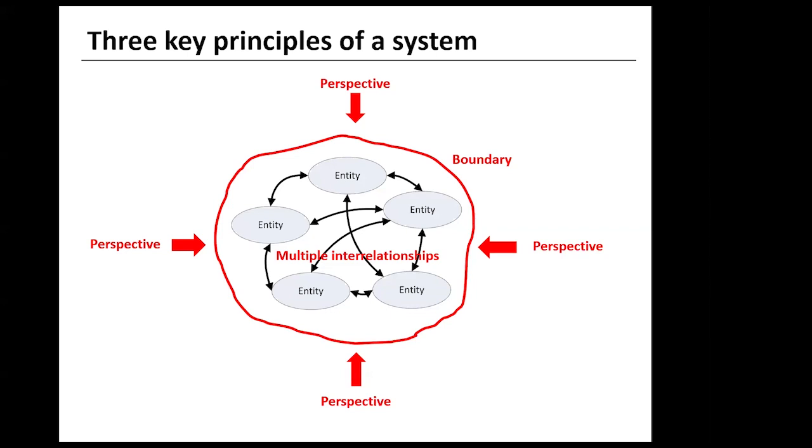Thirdly, we have to think about boundary judgments. These are decisions about what is or is not part of a system. Probably the delivery driver would see the system as being bounded by their warehouse and the instructions on their mobile device.